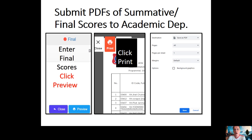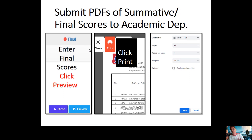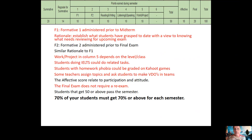For the summative and the final scores, you have to submit these to the academic department — not only in the system, but also you have to send PDF files. To get a PDF file, after you've entered the final scores, scroll down to the end of the page and click on 'Preview'. In the middle box it says 'Print'. Click on 'Print' and then in the third box you'll see 'Save as PDF'. That's it — it's a piece of cake. This only applies after the summative and the final exams.